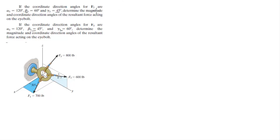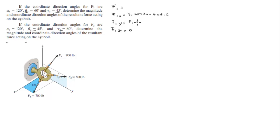I'm going to do them both at the same time to avoid wasting time. Let's find F1 first. F1 has an X component, a Y component, and a Z component. The Z component is obviously 0 because there is no Z component on F1. The X component is F1 cosine of 30, which comes out to be 606.2. The Y component is F1 sine of 30, which comes out to be 350. So F1 equals 606.2i + 350j + 0k.